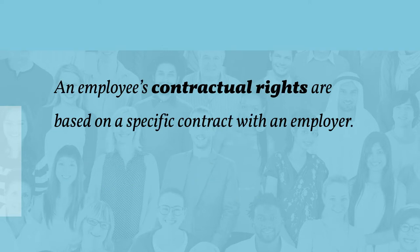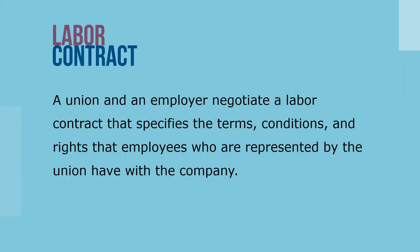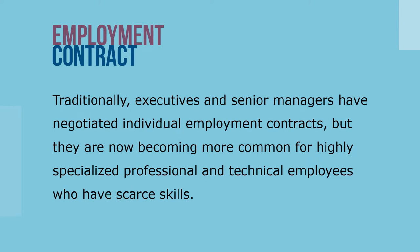An employee's contractual rights are based on a specified contract with the employer. For instance, a union and an employer negotiate a labor contract that specifies the terms, conditions, and rights that employees who are represented by the union have with the organization. The contract also spells out the company's rights and obligations. Traditionally, executives and senior managers have negotiated individual employment contracts, but they are now becoming more common for highly specialized professional and technical employees who have scarce skills.